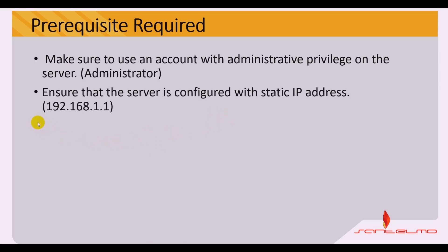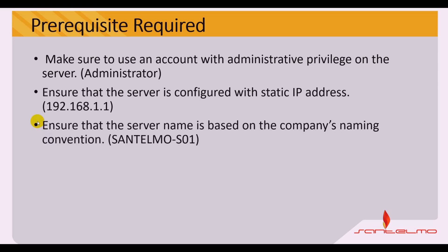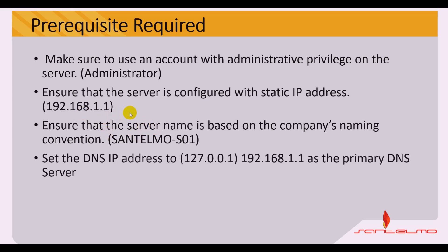We have to ensure that the server is configured with a static IP address. In this video we will be using 192.168.1.1. We also have to ensure that the server name is based on the company's naming convention, like santelmo-s01. Next, we need to set up the DNS IP address to 192.168.1.1 as the primary DNS on the server. This is the same IP address assigned to our server because on santelmo-s01 we are going to configure both ADDS and DNS.